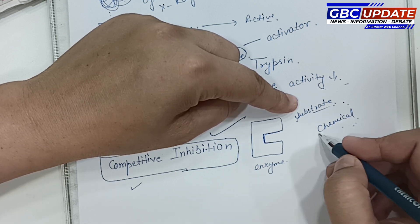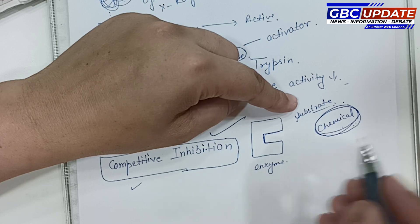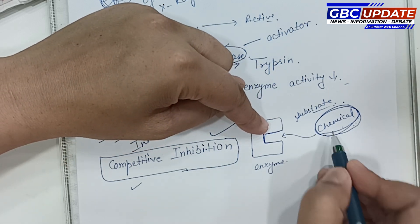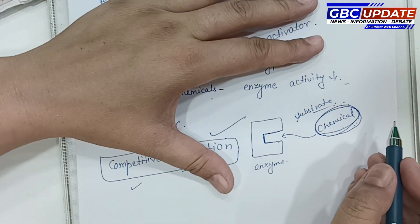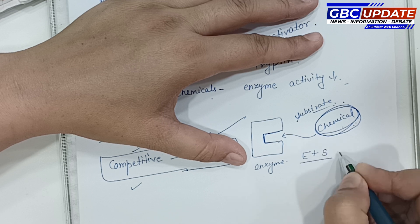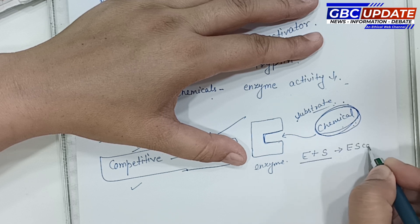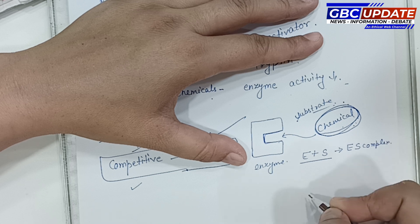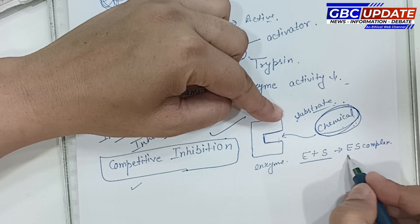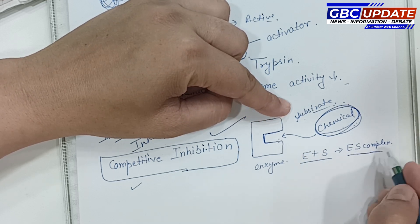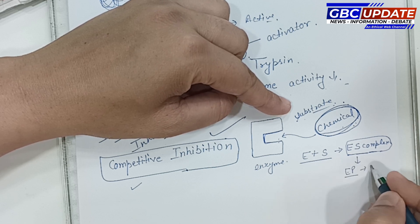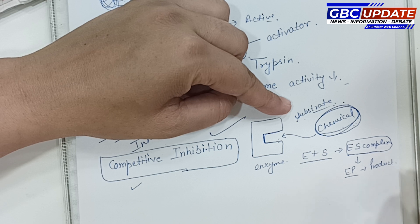In competitive inhibition, a particular chemical structurally similar to the substrate binds to the enzyme's active site. Normally, the enzyme combines with the substrate to form an enzyme-substrate complex, leading to product formation. But when the inhibitor binds instead, no product is formed.